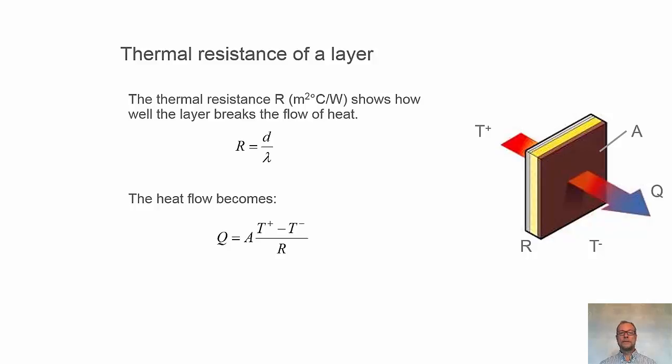The thermal resistance, which has units square meter Kelvin per watt or square meter Celsius per watt, explains how well it resists heat transfer by conduction. R is defined as D divided by lambda, thickness divided by thermal conductivity.